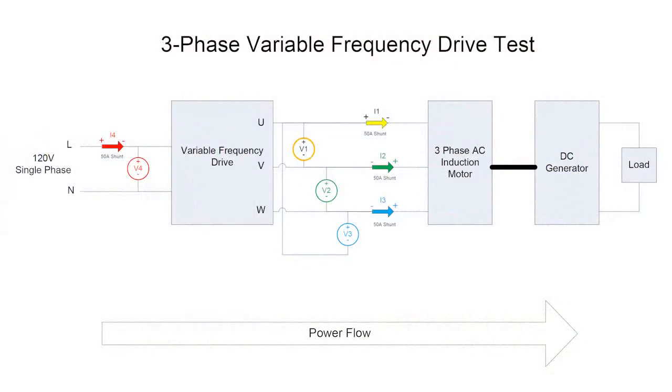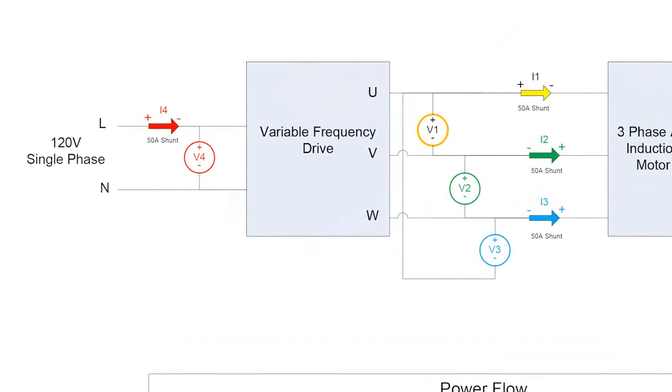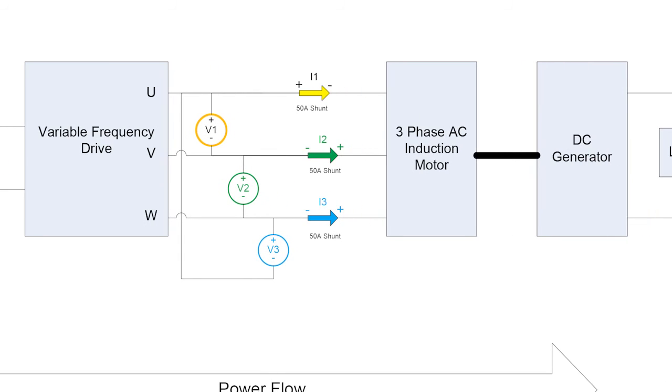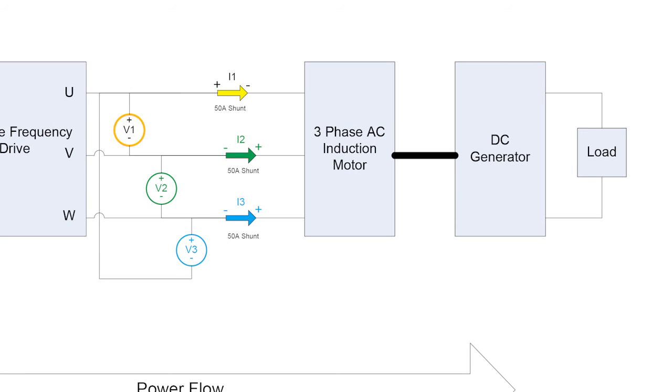I've got a block diagram of what I've got wired up here. I've got a 120-volt single phase line coming into this variable frequency drive. The variable frequency drive is generating three phases out. It's in a delta wiring configuration. It's driving a three-phase AC induction motor, and then that induction motor is mechanically coupled to a DC generator, and that's connected to a load.